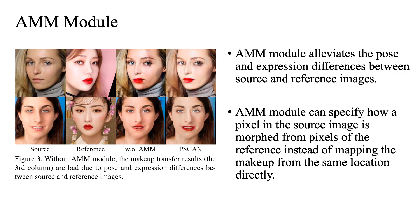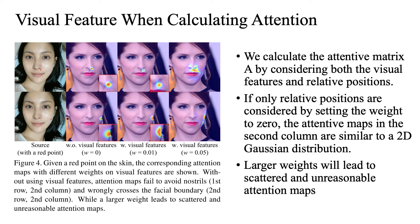This slide shows the ablation study on the AMM module. The AMM module can specify how a pixel in the source image is morphed from pixels of the reference image, instead of mapping the makeup from the same location directly. By applying the AMM module, the pose and expression misalignments are well solved and the results are much better. We calculate the Attentive Matrix A by considering both visual features and relative positions. If only relative positions are considered by setting the weight to zero, the attentive maps are similar to a 2D Gaussian distribution, which may wrongly cross the facial boundary. While a larger weight will lead to scattered and unreasonable attention maps.